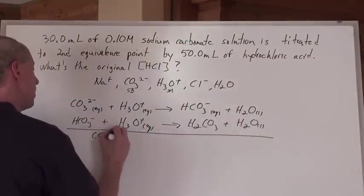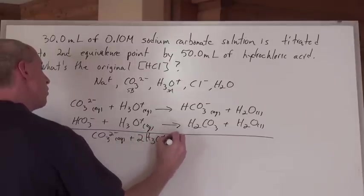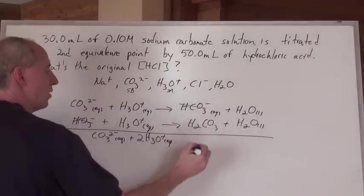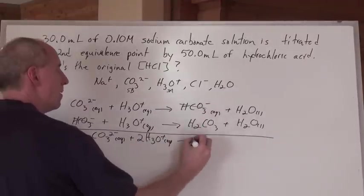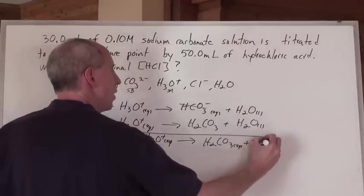So net-wise, you get CO₃²⁻ plus two hydroniums, because it takes two hydroniums to give their protons to one of these. This cancels with this, you see, on opposite sides, to make H₂CO₃(aq) plus 2H₂O.